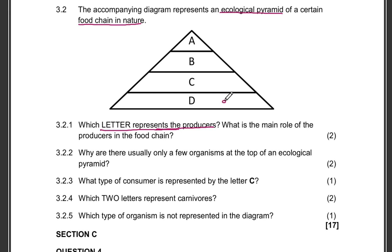Now obviously producers are here at the bottom of our ecological pyramid. So that is letter D. And the main role of producers in the food chain is obviously to produce their own food during photosynthesis. So producers, the main function is to produce or make their own food, or to be specific, to produce glucose or organic food during photosynthesis.